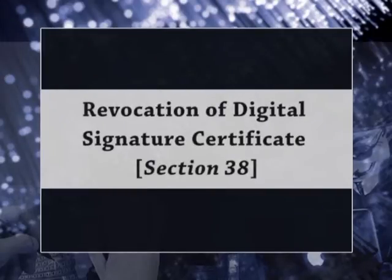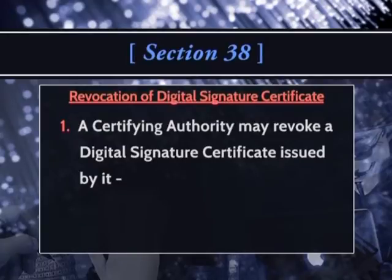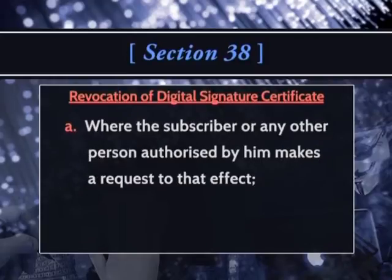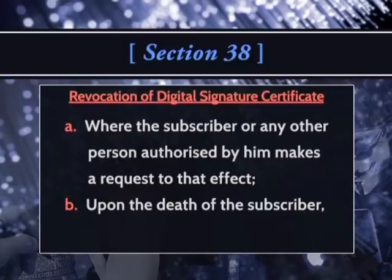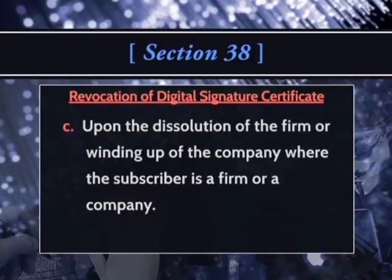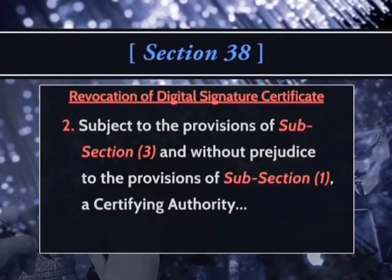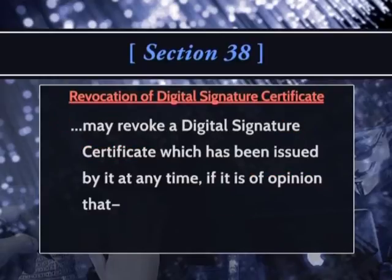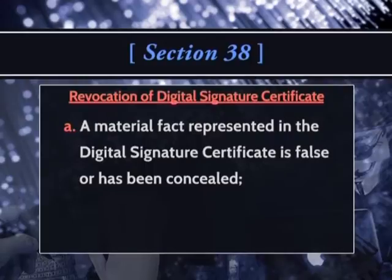The revocation of a digital signature certificate is defined in Section 38. A certifying authority may revoke a digital signature certificate issued by it when the subscriber or any other person authorized by him makes a request to that effect, or upon the death of the subscriber, or upon the dissolution of the firm or winding up of the company where the subscriber is a firm or company. Additionally, a certifying authority may revoke a digital signature certificate at any time if it is of the opinion that a material fact represented in the certificate is false or has been concealed.